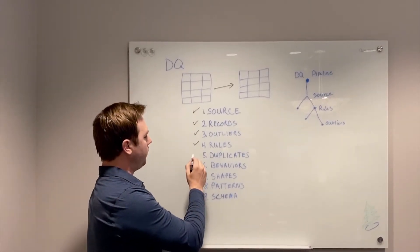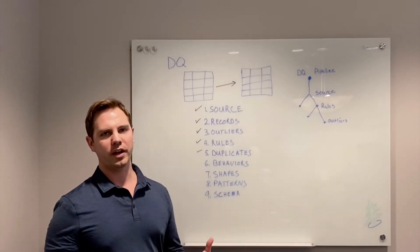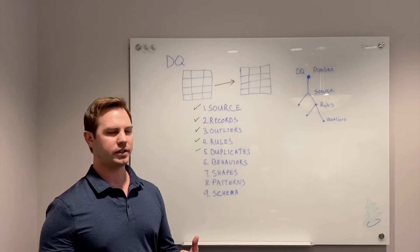Duplicates would be a good example of something like Bill Gates, William Gates, similar records that we want to make sure we don't have duplicate data in our systems.